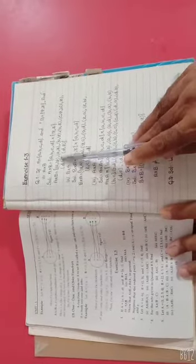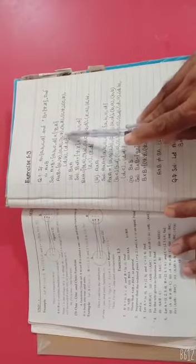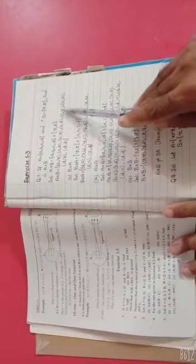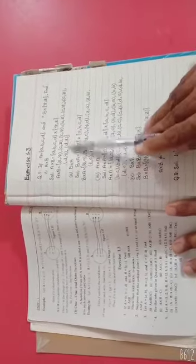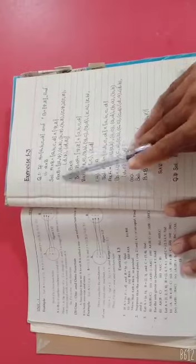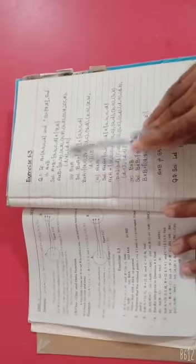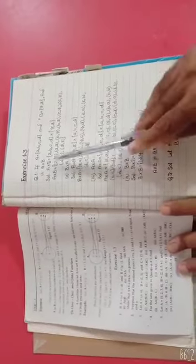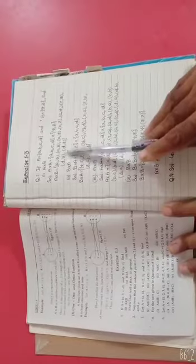A cross B is equal to {(a,y), (a,z), (b,y), (b,z), (c,y), (c,z), (d,y), (d,z)}. Then we close this with curly bracket. This is our part 1 which is complete. This is our answer.